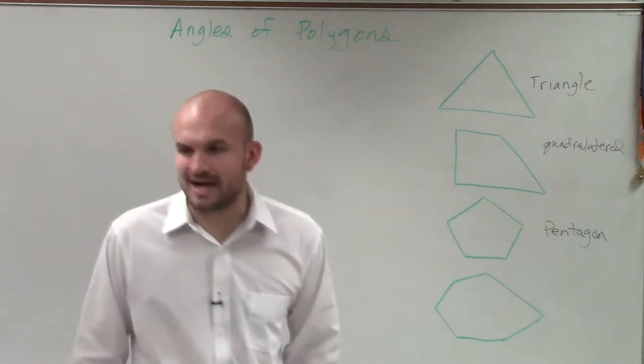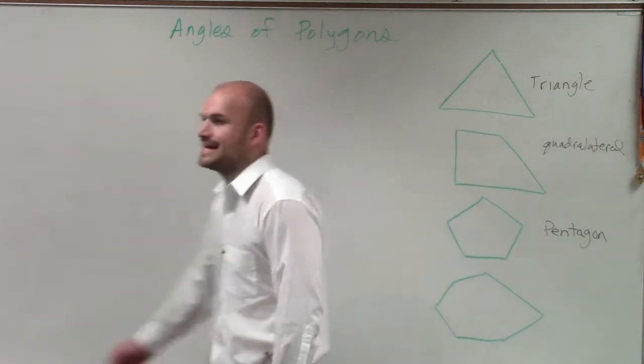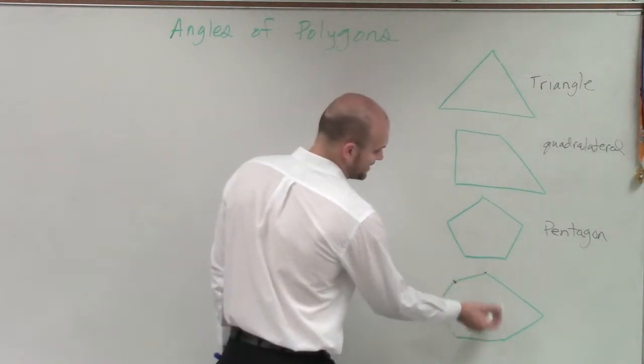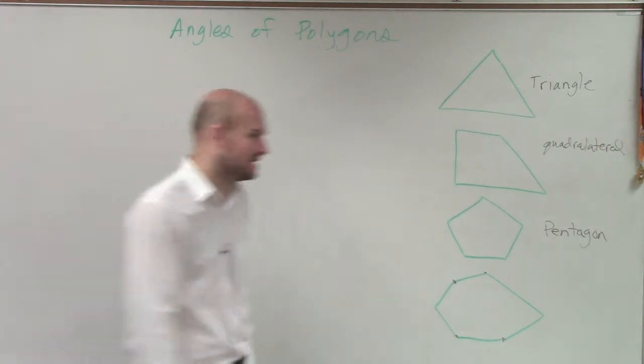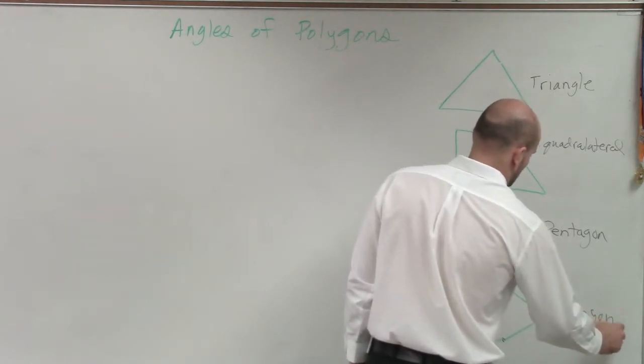So now we have a pentagon. And then on the last one, this one actually has six sides. So there's a vertex on each one of these. So when you have a six-sided, that is what we call a hexagon.